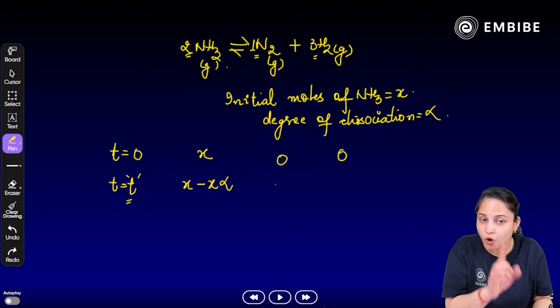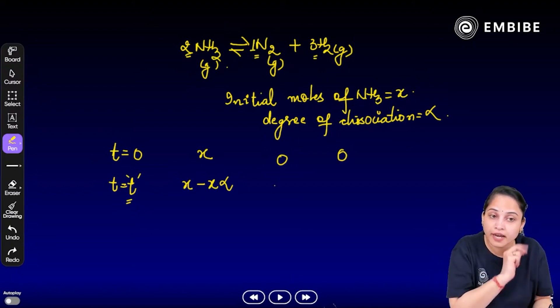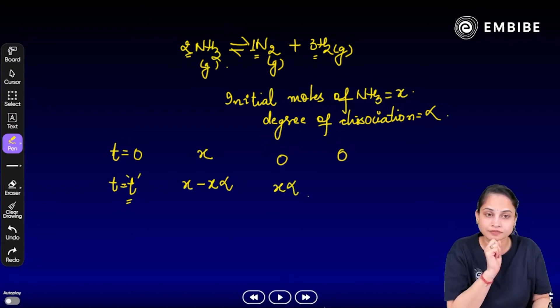So, how many number of moles are formed for N2 now? It will be x alpha. Now, you will and it will be 3 x alpha.